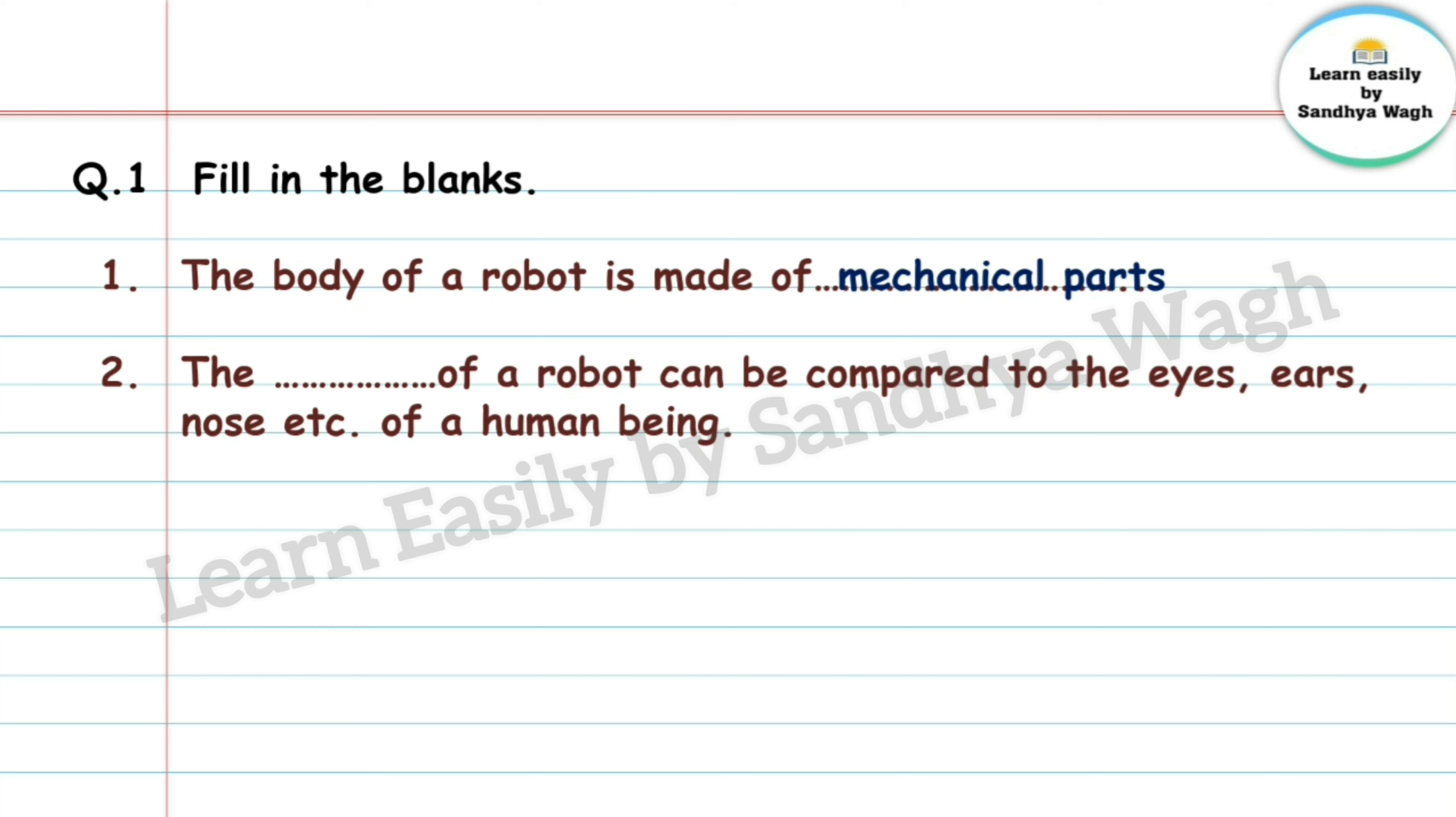2. The dash of a robot can be compared to the eyes, ears, nose etc. of a human being. Answer is sensors. 3. A robot can learn and do only what the dash makes it possible for it to do. Answer is computer program.